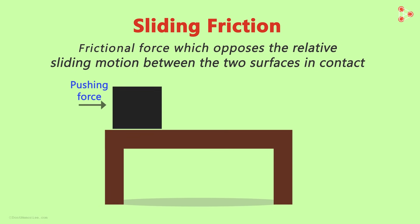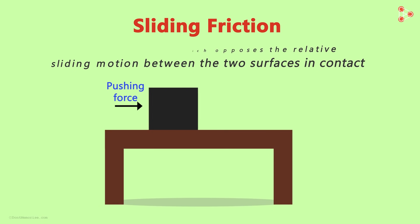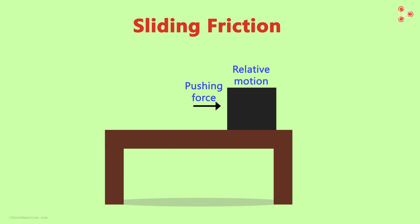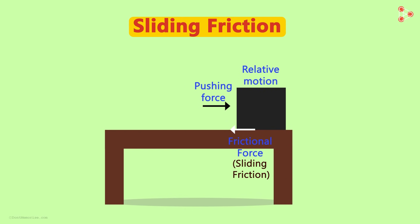In our example, when a box is moving on the table, we say that the box is in relative motion with the table. The resistive force applied by the table when the box is moving is called sliding friction. Remember, the objects have to be in relative motion.